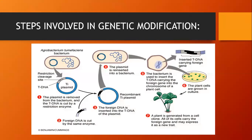The fourth step includes reinserting the plasmid into the bacterium to mature its offspring and make a new recombinant organism now called a genetically modified organism. The bacterium is used to insert the transfer DNA carrying the foreign gene into the chromosome of the plant cell. The plant cells then grow in an Agrobacteria plate or culture with nutrient broth to make plant growth more comfortable. Finally, the plant is generated from a cell, all of its cells carrying the foreign gene combined with the plasmid, and may express it as a new trait. The plant is now called a genetically modified organism.